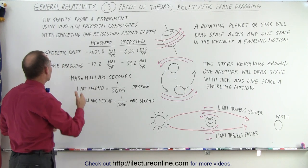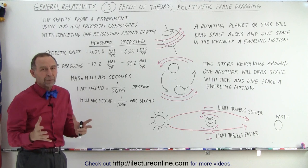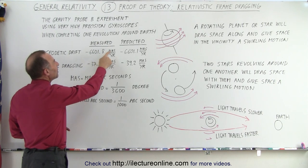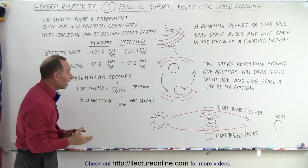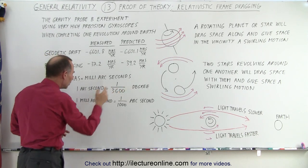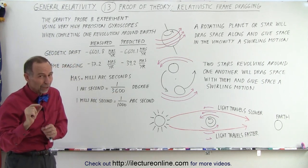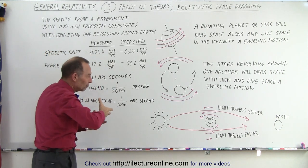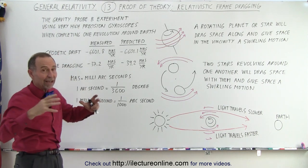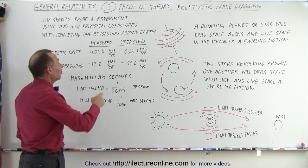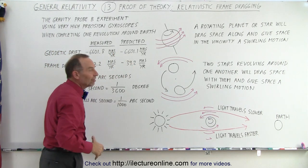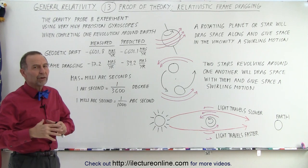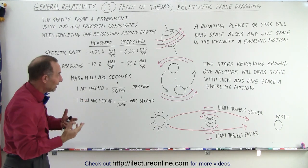There are two effects. One is called the geodetic drift, caused by simply the warping of space — that's very easy to measure, and the amount is very large: minus 6601.8 milli-arc-seconds. A milli-arc-second is one-thousandth of an arc-second, and an arc-second is one three-thousand-six-hundredth of a degree. This is almost seven arc-seconds per year of shift due to the gravitational effect of Earth in space. The measured value matches the predicted value very well — we already know space is warped, and we use careful calculations based on that for GPS.